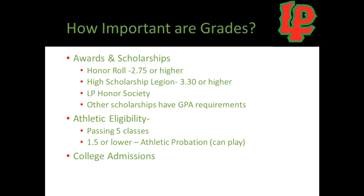If you are an athlete, we do have eligibility requirements. Students must be passing five classes to play. If they are not passing five classes, they will not be able to play. If they are failing one class, they will be on athletic probation — they can still play, but we will be monitoring them. College admissions will also look at the full transcript from freshman, sophomore, and junior year, and students will have to send transcripts so colleges can see all their grades.